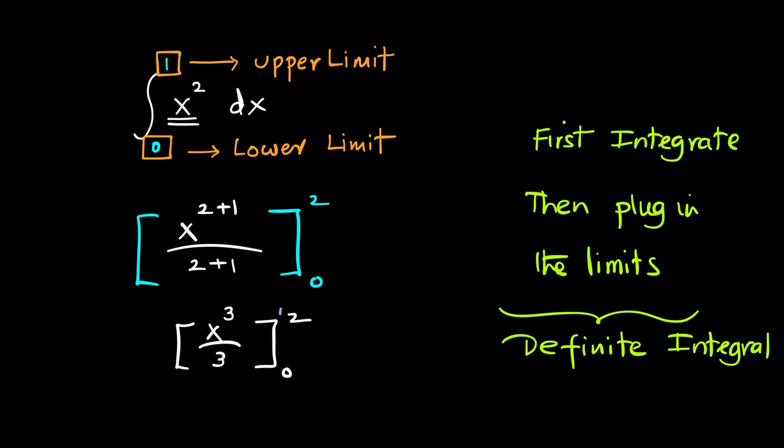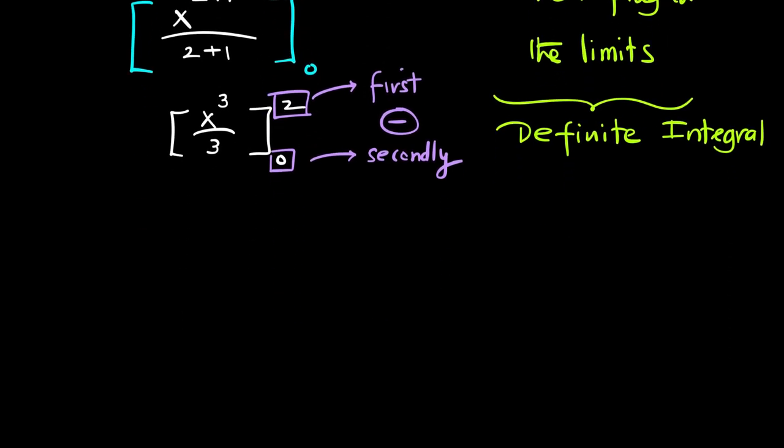The rule is first plug in the upper limit, then secondly we will plug in the lower limit and there will be a negative sign between the two. So therefore, x cube over 3 actually becomes 2 cube over 3. This 2 is placed in place of x.